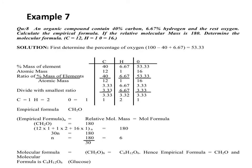An organic compound contains 40% carbon, 6.67% hydrogen, and the rest oxygen. Calculate the empirical formula. If the relative molecular mass is 180, determine the molecular formula. The first step is to find the percentage of oxygen: 100 minus (40 plus 6.67), which equals 53.33%.